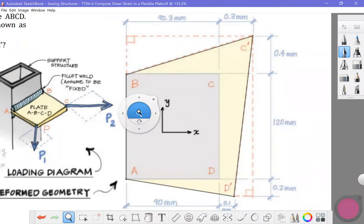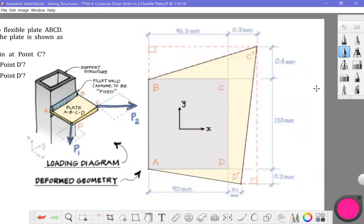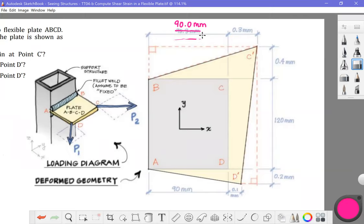Let's turn these layers off. Just want to do a quick visual of that deformation pattern. Another thing that I want you to notice is that the original dimensions of plate ABCD are 90 millimeters by 120 millimeters.